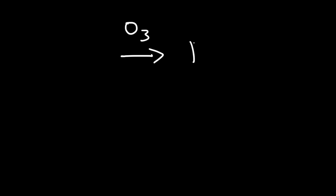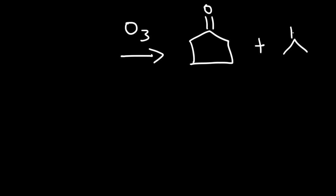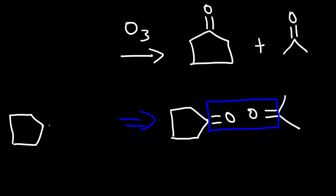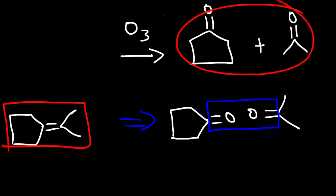For practice, let's try a similar example. Go ahead and draw the alkene that was used to make these two products. Follow the same process: draw the two molecules with the carbonyl groups facing each other, then replace what you see with an alkene. The starting material looks like this — that is the alkene that was used to make these two compounds.